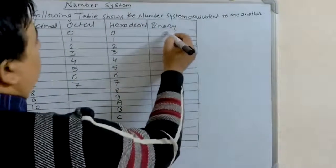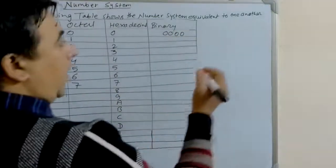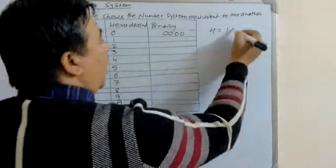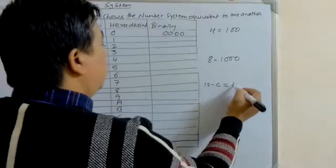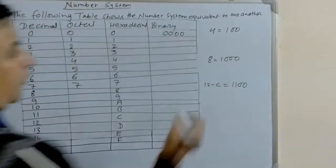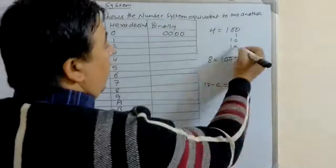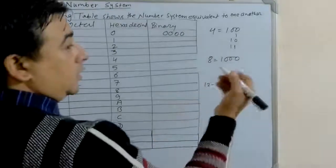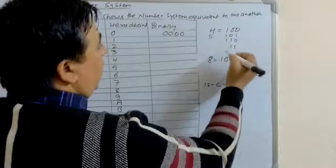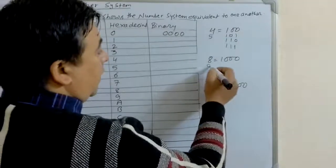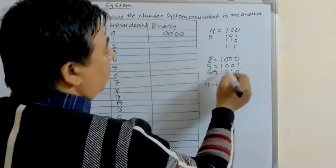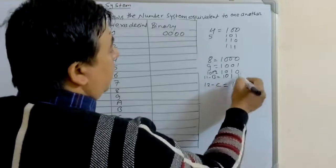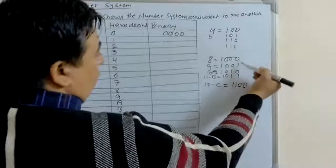The binary equivalents are as follows: 0 is 0000, and moving upward: 4 equals 100, 8 equals 1000. Adding 1 each time makes it easy to find the next number: 5 is 101, 6 is 110, 7 is 111, 8 is 1000, 9 is 1001, 10 is 1010, 11 is 1011.